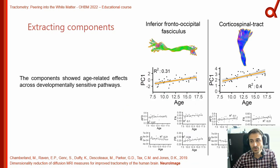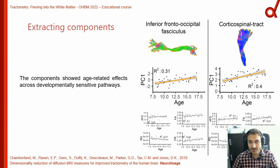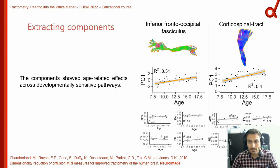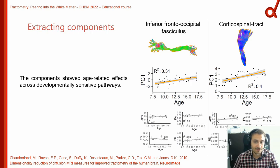You could then take the first component and see how it relates to a given clinical score or phenotype data. In this case, these were children aged 8 to 18 years old, and the first component was better at predicting the age of the subjects than any of the individual measures which formed that component. PC1 had a stronger relationship with age than any of the individual metrics, and the same held for the corticospinal tract.